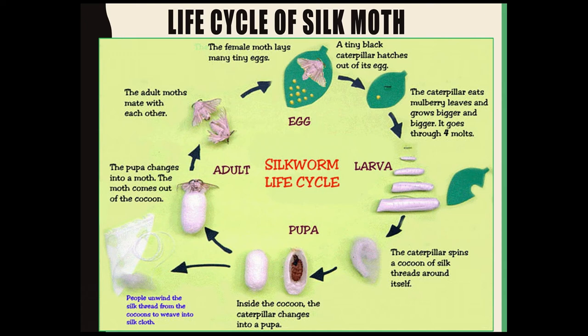The larva eats voraciously and grows very fast. During this stage, they shed their skin four times, and this shedding of the skin four times is called moulting. You can see the four moults of the larva.